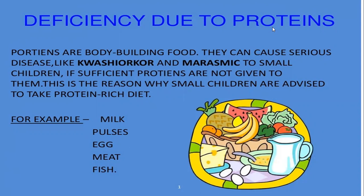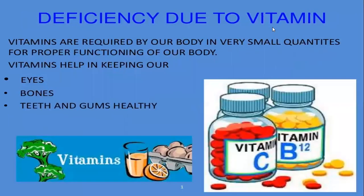Next is deficiency due to proteins. Proteins are body-building food — they repair the damaged cells of our body. If we are not taking proteins in our diet, it can cause serious diseases like kwashiorkor and marasmus in small children. If a protein diet is not given to them, they can suffer from such diseases. Children are advised to take a protein-rich diet as they are growing physically, so you must include milk, pulses, egg, meat, and fish in your diet.